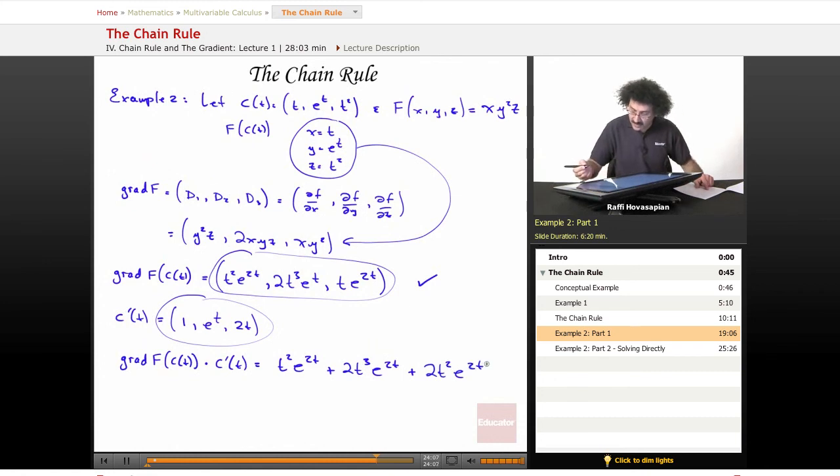And that's it. Let's see if there's anything that I can combine here. t^2·e^(2t), 2t^2·e^(2t). Yes, there is. So it's going to be 3t^2·e^(2t) plus 2t^3·e^(2t). And that's my final answer. That's it.